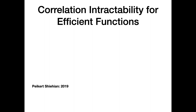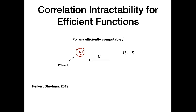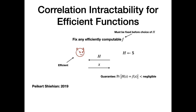The second work, by Peikert and Shiehian, constructed a hash function from LWE satisfying exactly these requirements. Specifically, they construct a hash function with the following security property: if the hash function is chosen uniformly at random from the family, it is computationally hard for any efficient adversary to find any x such that the hash of x equals f(x), for any fixed efficiently computable function f. Importantly, f must be fixed before the choice of the hash function. Peikert and Shiehian then plugged this hash function into the result of Canetti, Lombardi, and Wix to get the first construction of NIZKs from LWE.